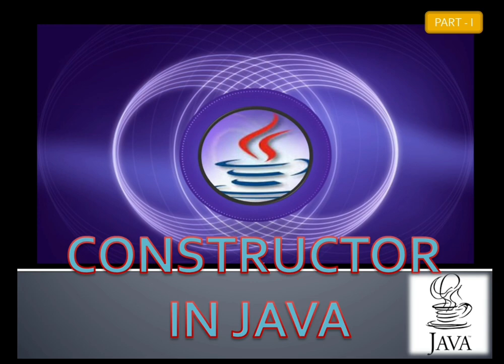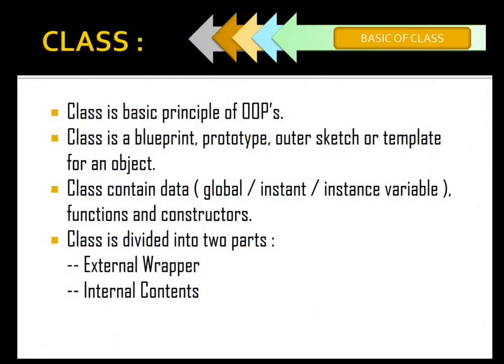Practically I am going to consider in my next video. Now, first of all, class — as you all know — is a basic principle for OOP, and class is a blueprint, prototype, auto sketch, or we can say template for an object. Class contains data as well as functions and constructors. Data can be global, or we can say instance variables — all are the same things.